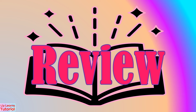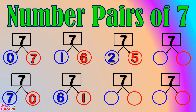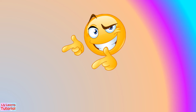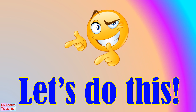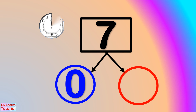Let's review! The number pairs of 7 are... Now that you know the number pairs of 7, it's your turn to enumerate them. Let's do this!